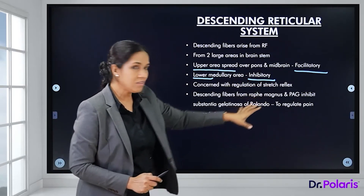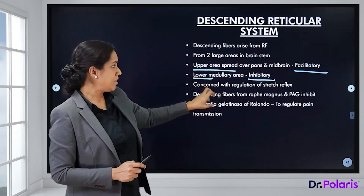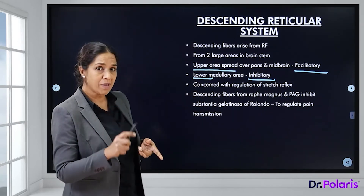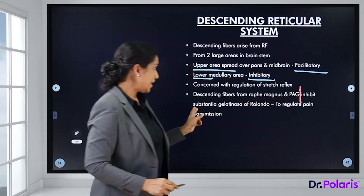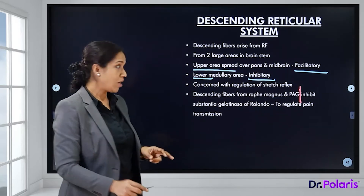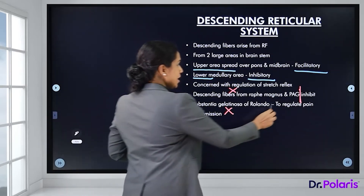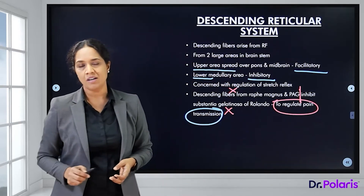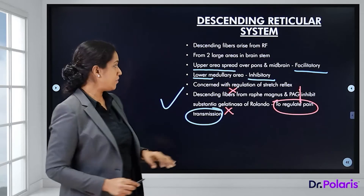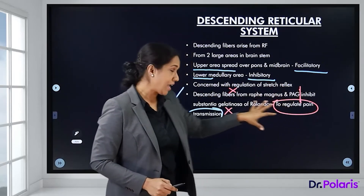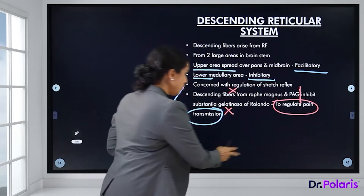The substantia gelatinosa of Rolando is involved in regulating pain transmission. The descending fibers from the raphe magnus and the periaqueductal gray inhibit the substantia gelatinosa of Rolando, and through this inhibition, pain transmission is regulated. This is how the reticular formation is able to modulate pain.